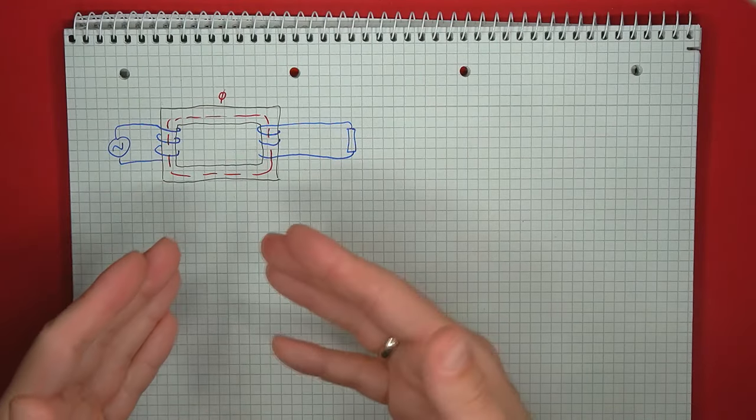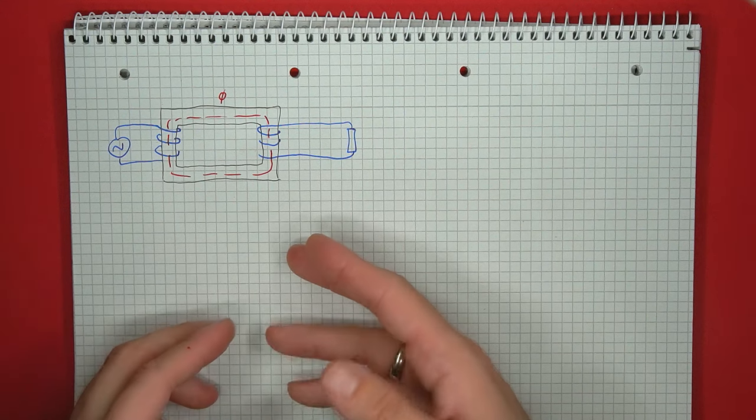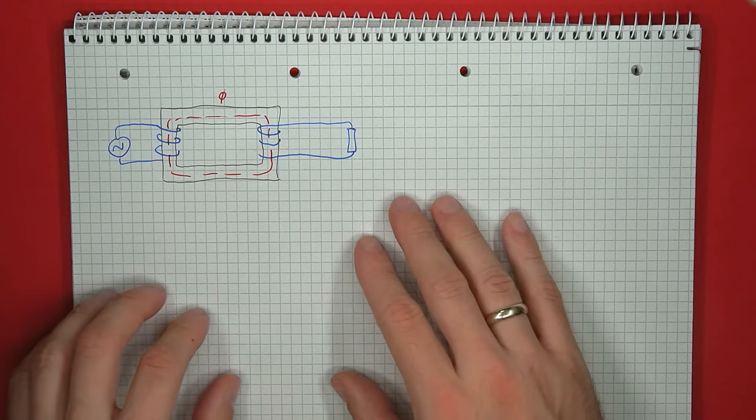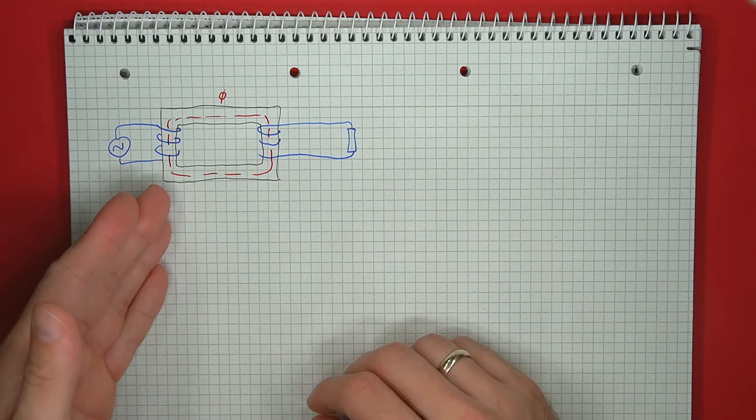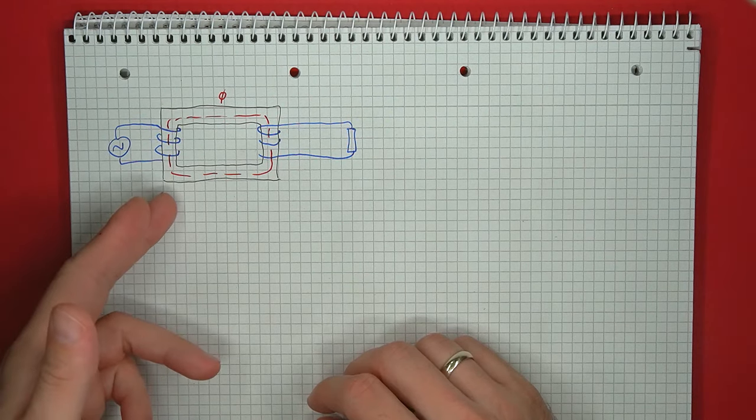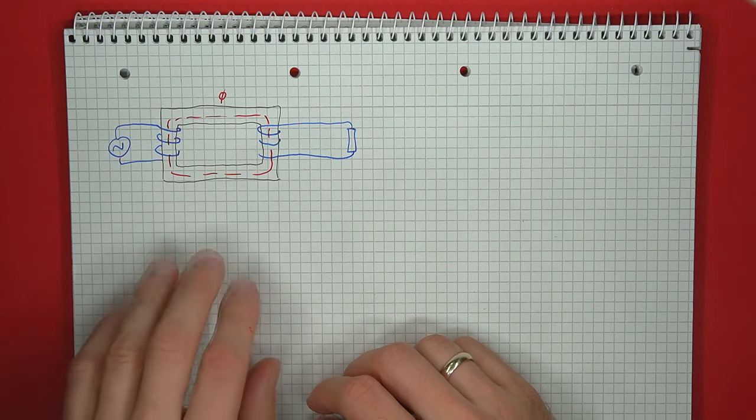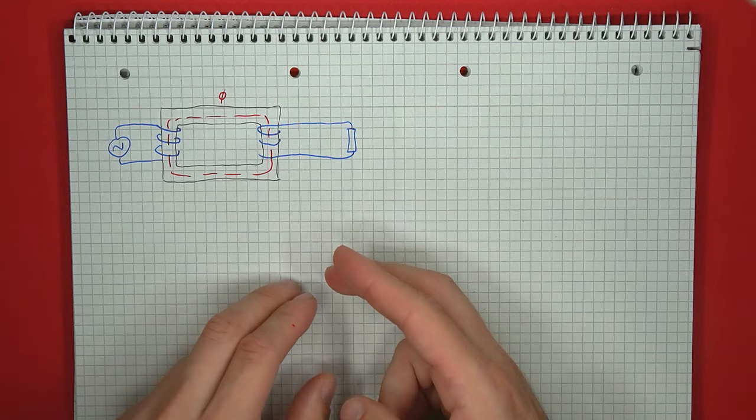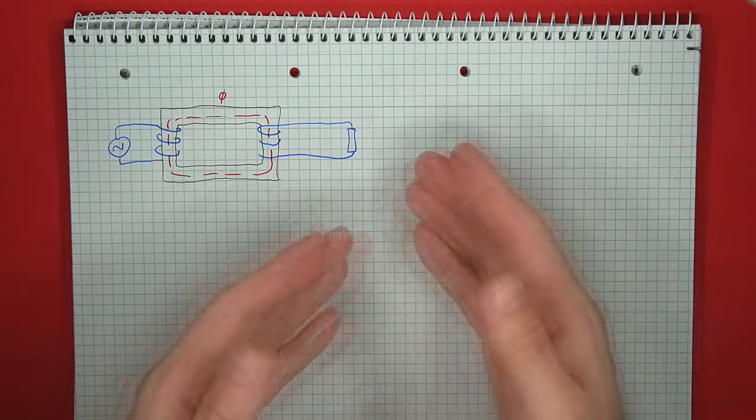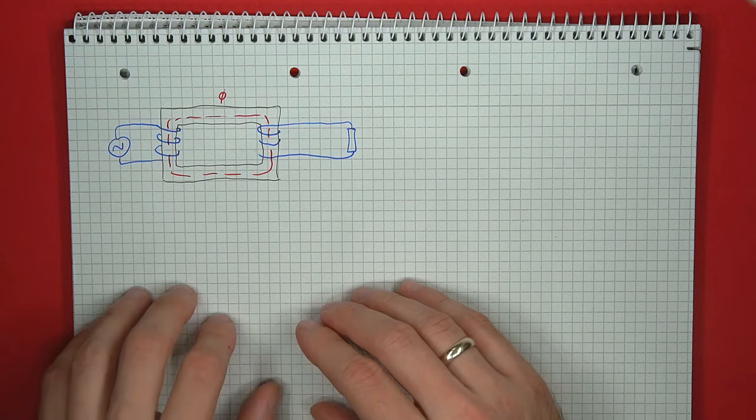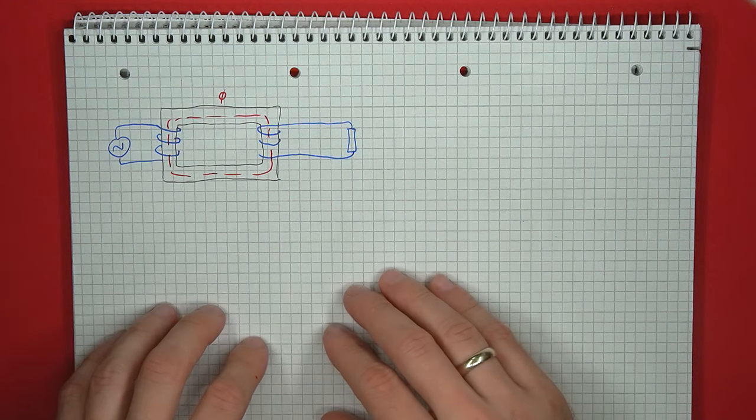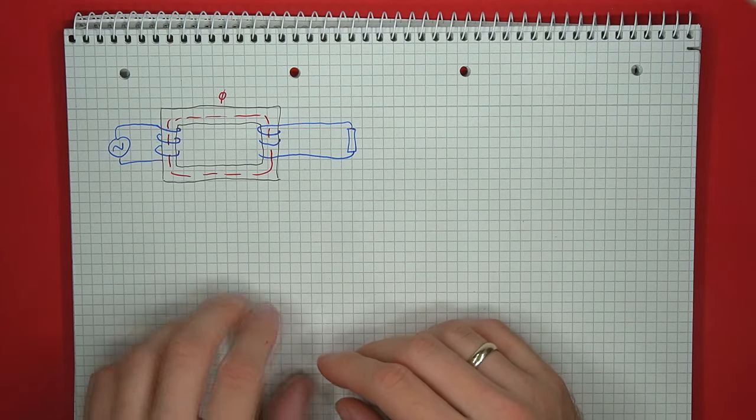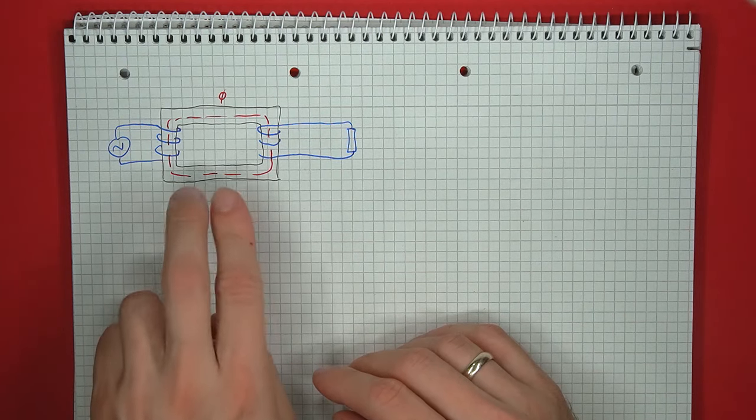By definition, a transformer works by transferring energy from one circuit to another using magnetic fields. A primary coil creates a magnetic flux, which is directed through a secondary coil using a magnetically permeable material. And at this second coil, the variable flux induces a voltage. Now, transformers are a widely used component, but the main limitation of this operating principle is the non-ideal magnetic material, since this will not work at any frequency.